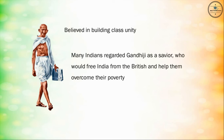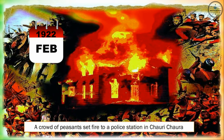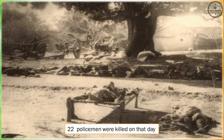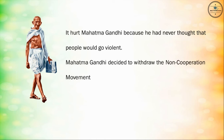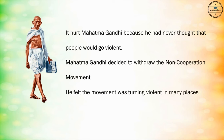In February 1922, a crowd of peasants set fire to a police station in Chauri Chaura. 22 policemen were killed on that day. This deeply hurt Mahatma Gandhi, because he had never wanted people to turn violent. Mahatma Gandhi decided to withdraw the non-cooperation movement, feeling that it was turning violent in many places.